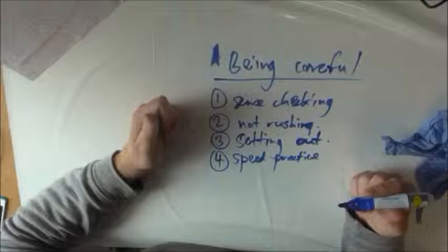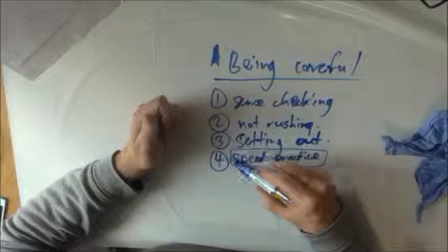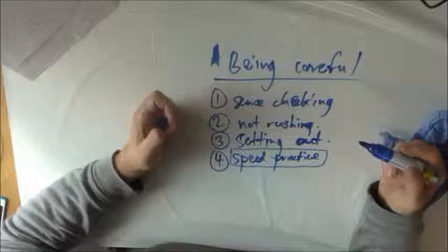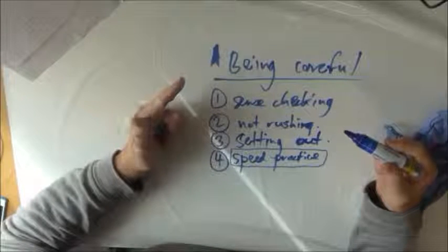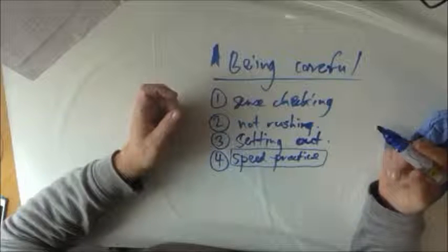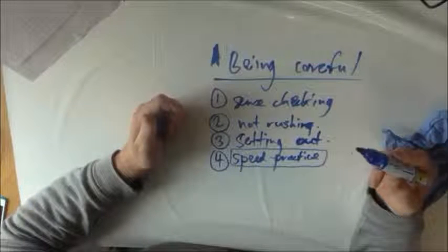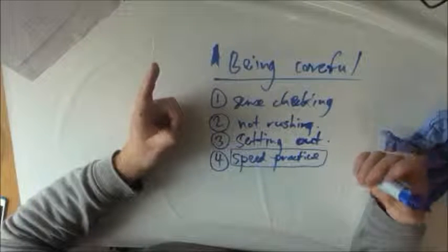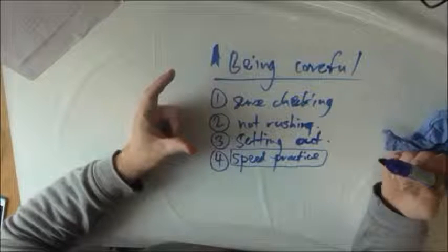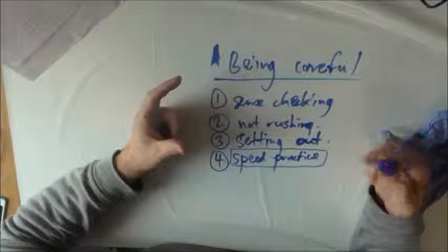Another option is to do very gentle, gradual speed practice. So when you're practicing, time yourself doing a question and then see, let's say it takes you two and a half minutes, well then try and do it slightly quicker and set yourself a target of maybe two minutes fifteen and then see if that costs you accuracy.